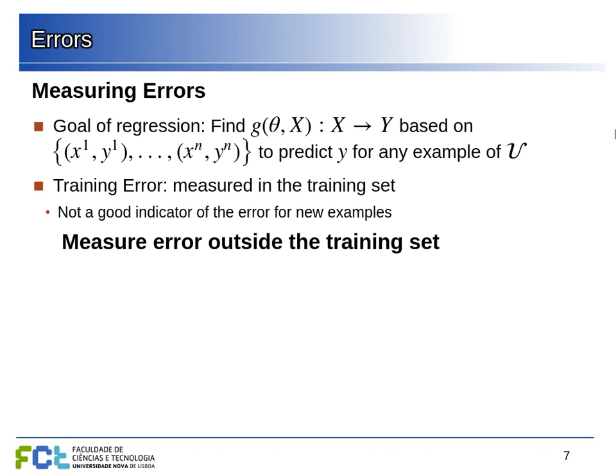The training error is not a good indicator of the error we will have outside our training set. We are minimizing it on purpose when we adjust the parameters, so if our model is too powerful we can get this error very low while increasing the error outside the data we know.